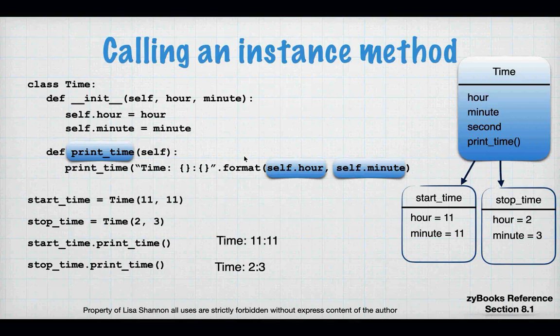The first place a lot of students get tripped up on objects in Python is `self`. Some languages don't require that special thing — they just automatically know the object that it came from. Python doesn't. You have to tell it where it came from by the word `self`.